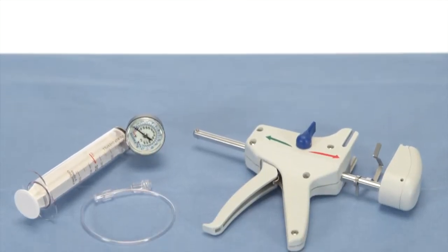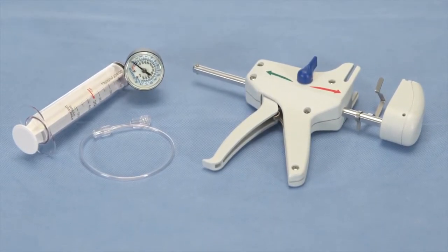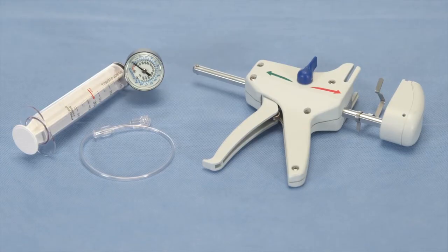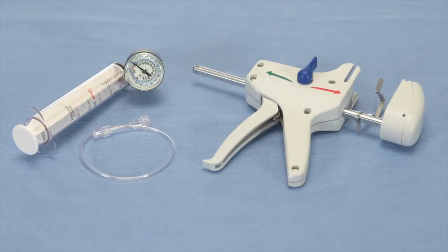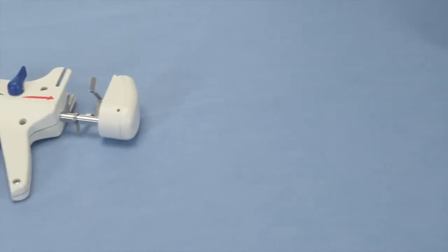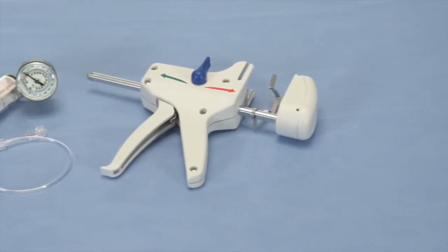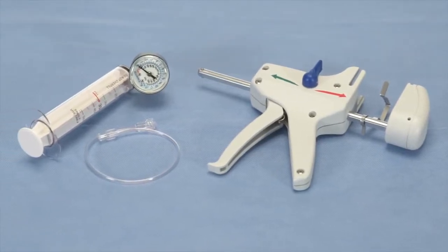The Alliance 2 Integrated Inflation Handle is a non-sterile reusable tool used with the sterile, single-use Alliance 2 Syringe Gauge Assembly, sold separately, designed to simplify inflation and deflation of balloon dilatation catheters.